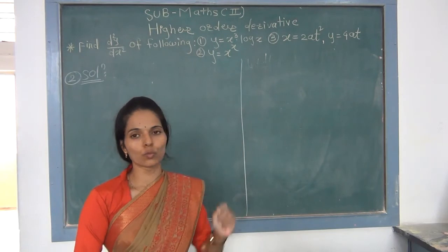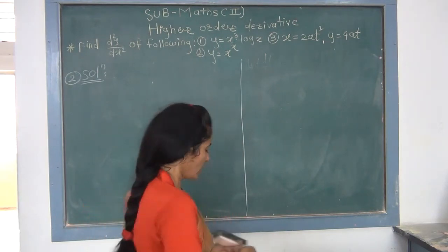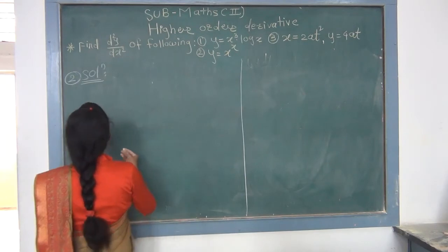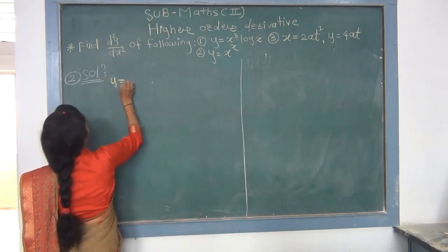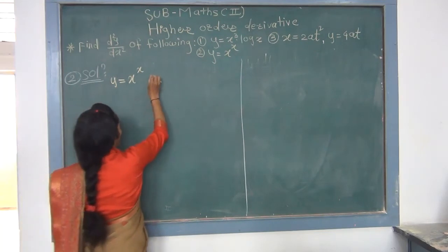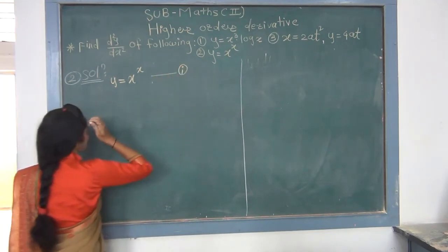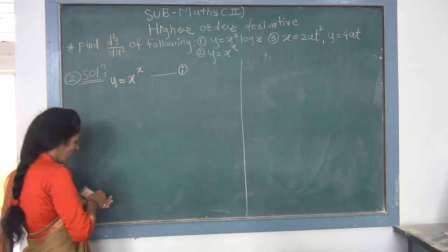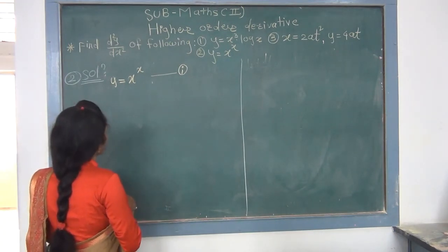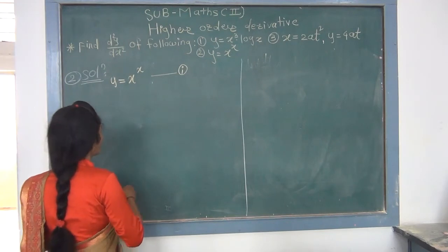The analysis for this problem: first find dy/dx using the parametric derivative formula dy/dx = (dy/dt)/(dx/dt). Then differentiate dy/dx with respect to x (not with respect to t — this is where most students make a mistake) to get d²y/dx².